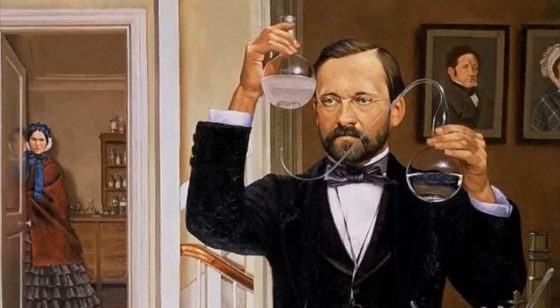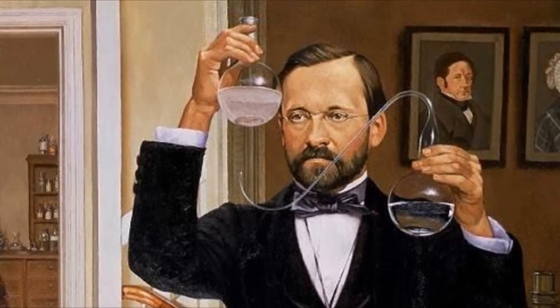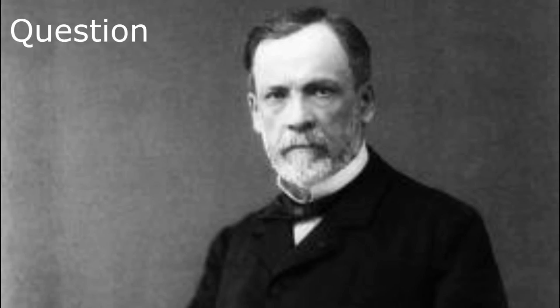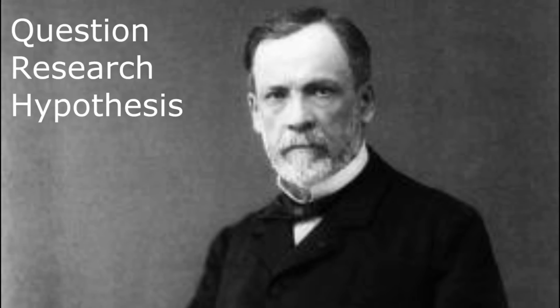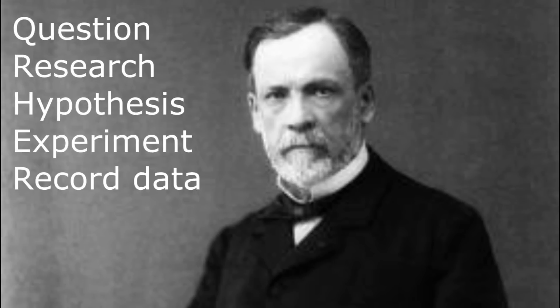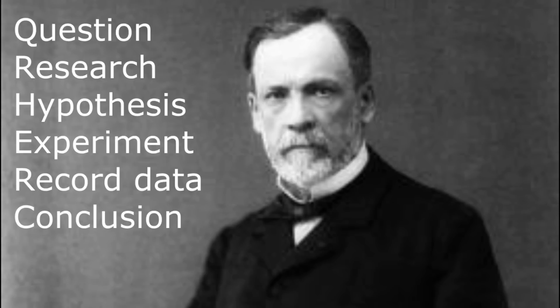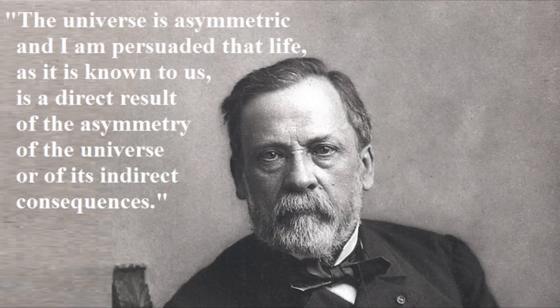Pasteur was successful because he used the scientific method and a carefully designed experiment to disprove spontaneous generation. He understood the question, researched what was known about it, formed a testable hypothesis, conducted his experiment to record the data, and drew his conclusion. In 1861, he submitted his study for peer review. His experiment proved that living microbes were abundant even in the air, and disproved spontaneous generation by showing that life did not arise from the dead remains of old life, but by contamination from continuing life. This led Pasteur to invent the law of biogenesis — that life only comes from life.